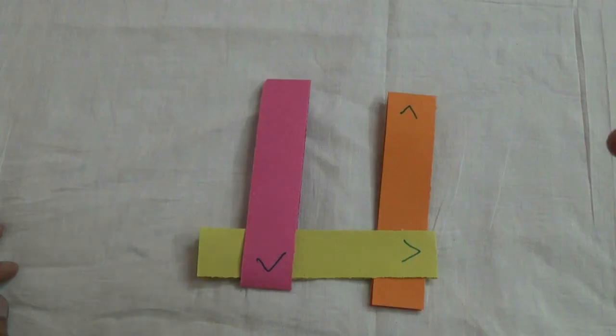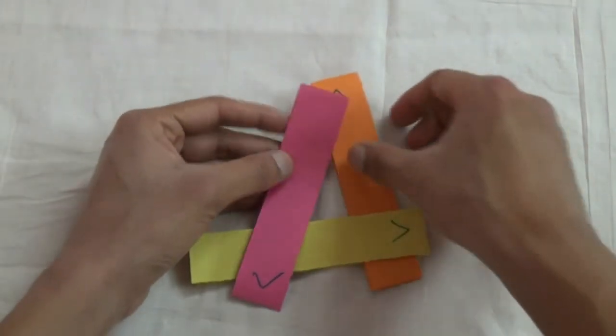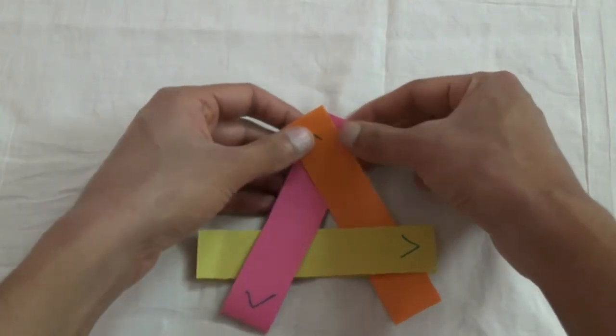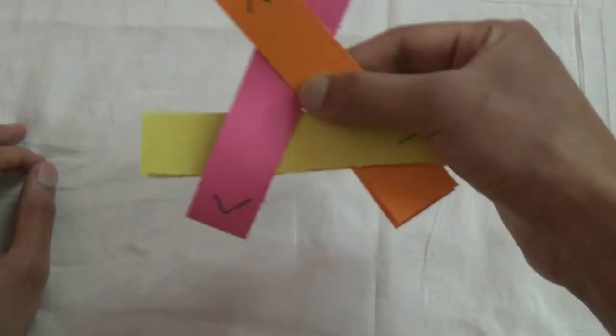Now comes the important step 4. Forming a triangle. In this step, take the free end of the pink strip and put it inside the folds of the orange strip like this.